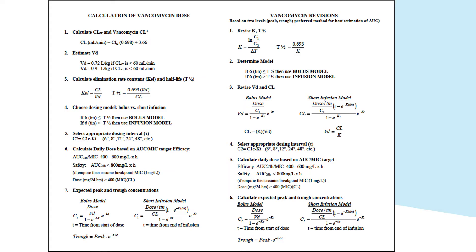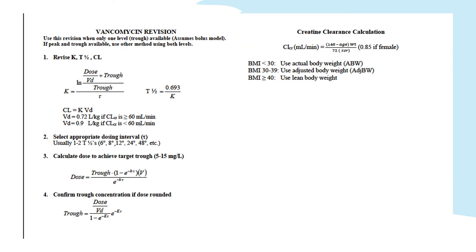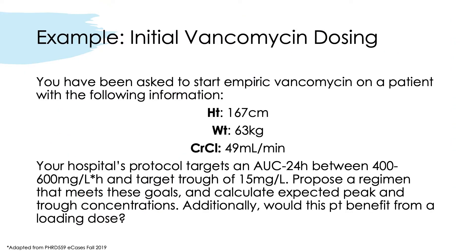This is the equation sheet from Blackboard for vancomycin. You are targeting an AUC-to-MIC of 400 to 600. This covers vancomycin revision when only a trough is available. Here is an example of initial vancomycin dosing — feel free to pause the video and try it on your own first. This is adapted from e-cases.